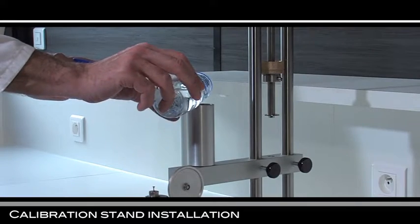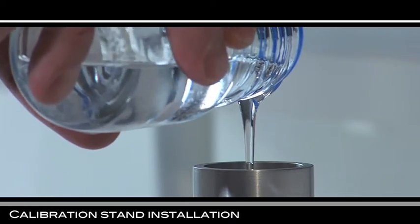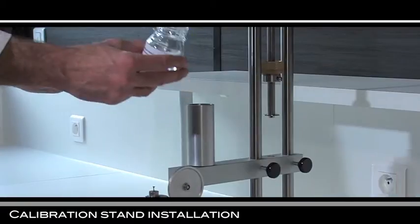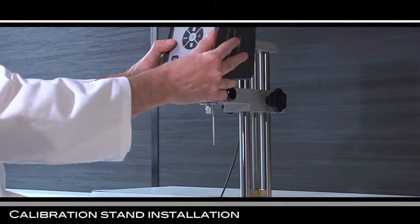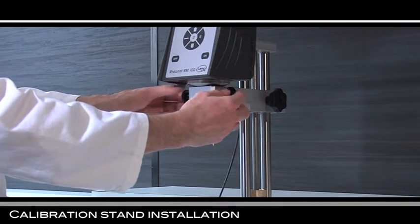Fill the cup two-thirds full, about 60 milliliters, with silicon oil of a thousand millipascal second. Install the viscometer on the arm of the calibration stand and block with the screws.